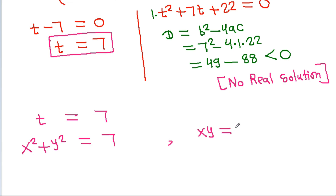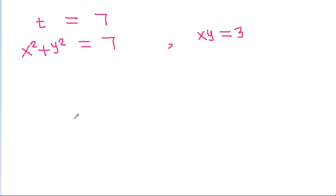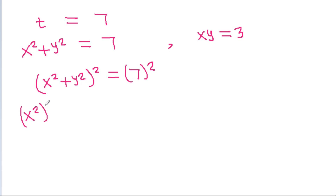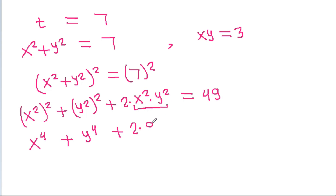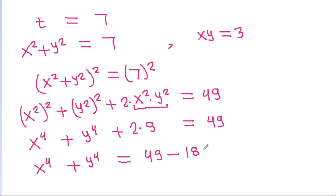We have xy equals 3 and x square plus y square equals 7. Squaring: x square plus y square squared equals 49, so x power 4 plus y power 4 plus 2 times x square y square equals 49. Since x squared y squared equals 9, we get x power 4 plus y power 4 equals 49 minus 18, which is 31.